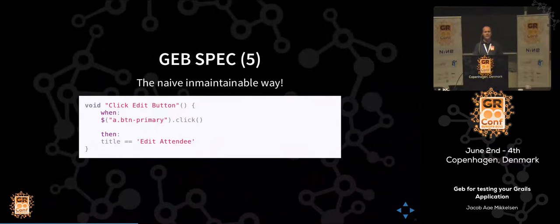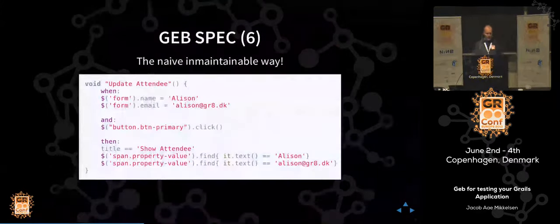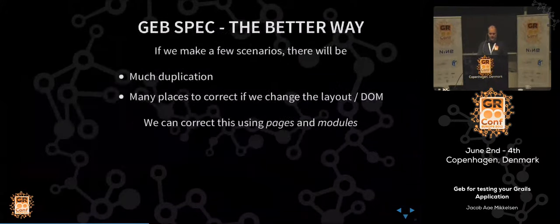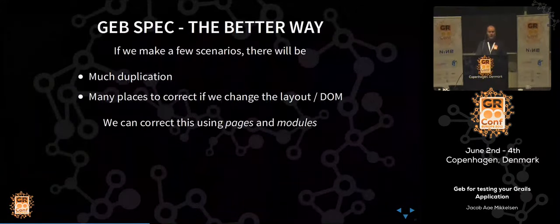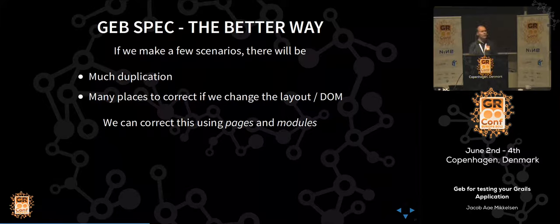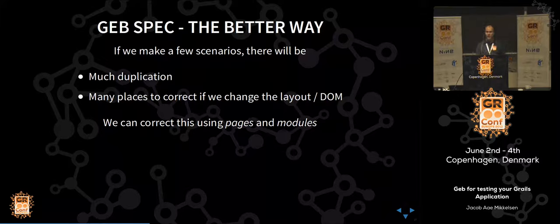This looks kind of messy — we have all the CSS selectors littered all over. We click, we edit, and again try to extract information. Once we made a few scenarios clicking around in the GEB specs, this gets extremely messy and totally unmaintainable. We have way too much duplication — all these selectors are littered everywhere. If we change our DOM, we'll have to change all our tests. We definitely don't want to do that when we have a lot of tests. We're pragmatic programmers.